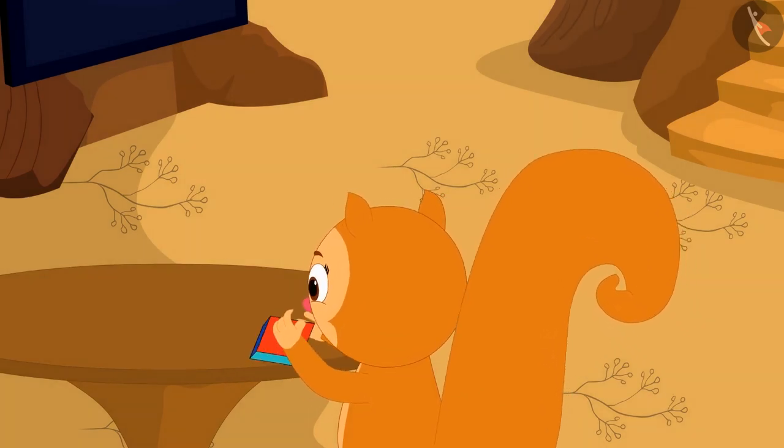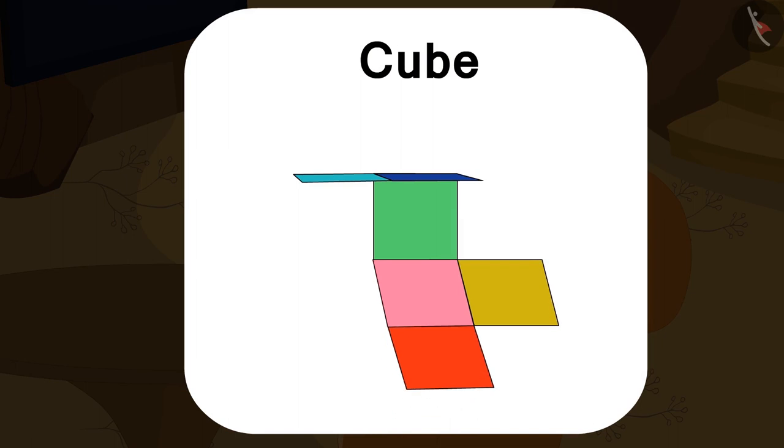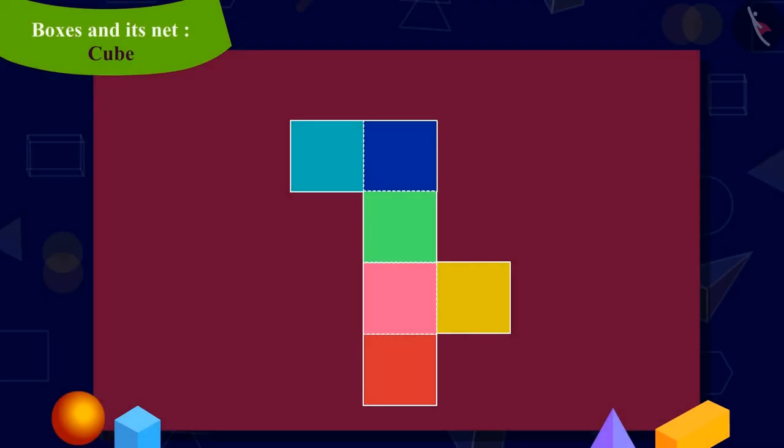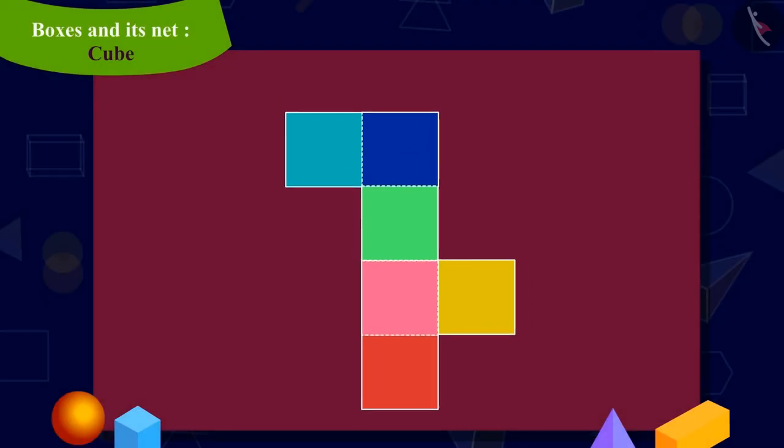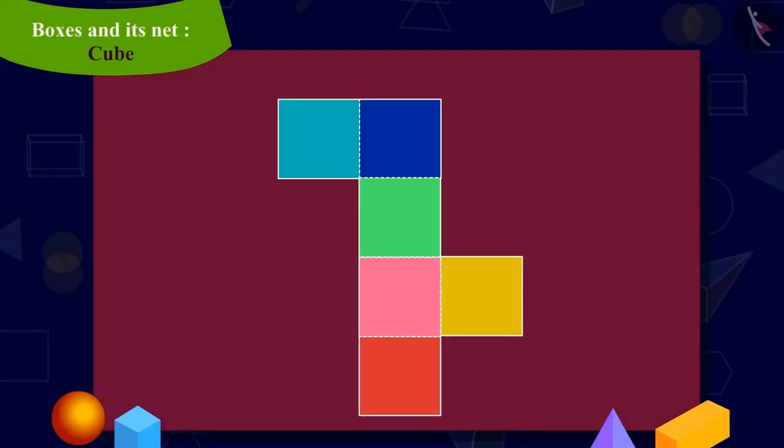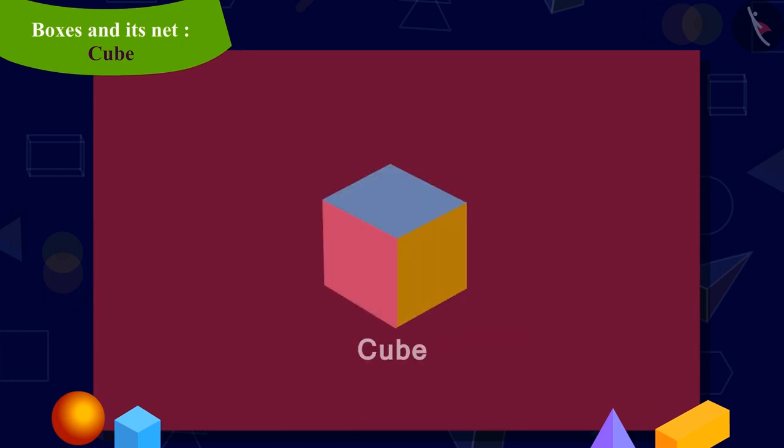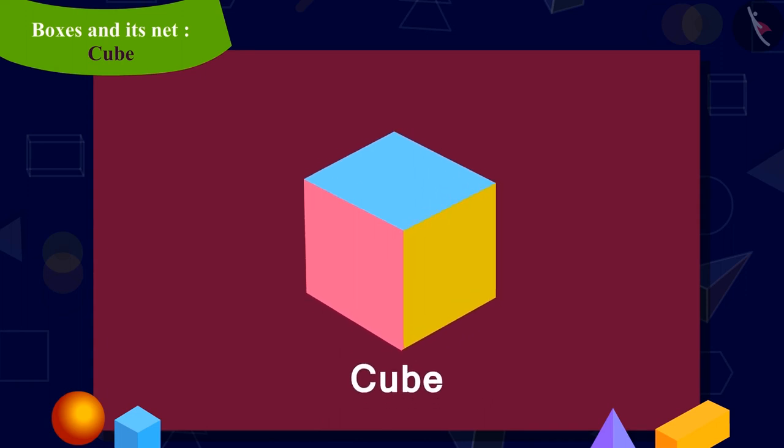Let's see if your answer is correct or not. Chanda cut out the shape and began to fold it this way. Well done kids, your answer is absolutely correct. This shape is the net of a cube and see that a box for Chanda is ready.